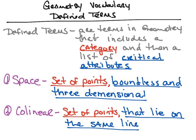The first one is space. Space is defined as a set of points, boundless and three-dimensional. So it has two things in its definition. The first thing — it's a set of points — is what we consider the category or its classification. The next thing — it's boundless and three-dimensional — is what we call the critical attributes.